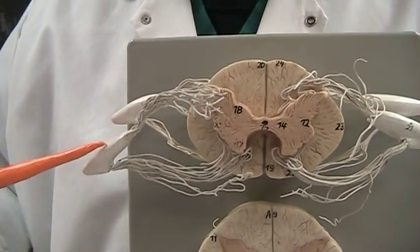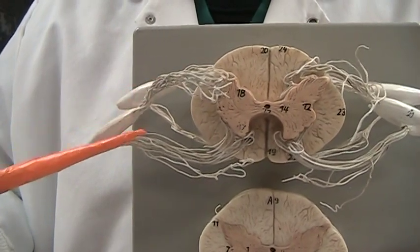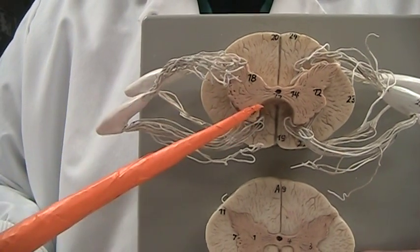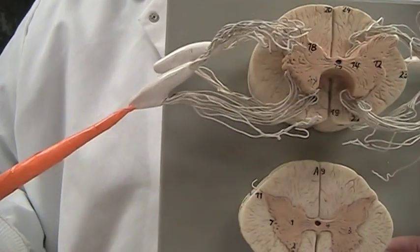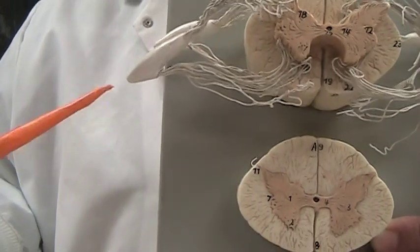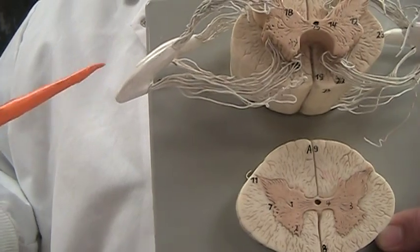So we have dorsal root ganglia, dorsal root, ventral root. So sensory input comes in this way, and motor output comes out this way. Where it collectively is together, we call this your spinal nerve root, the spinal nerves.